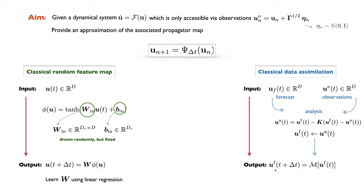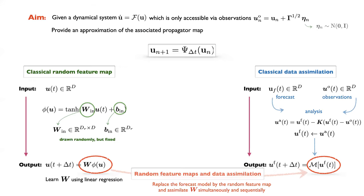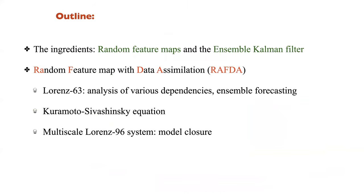This analysis — the optimal estimate for the current state — is used as the initial condition for another forecast with the forecast model M, which maps the analysis to the forecast at the next time step. The key idea is to replace this forecast model by the random feature model, and to learn the parameters w of the random feature model sequentially within the data assimilation procedure. This combined method is called RAFTER.